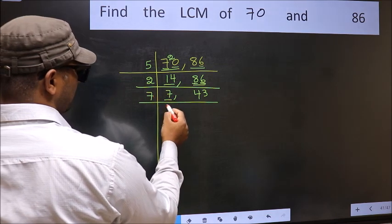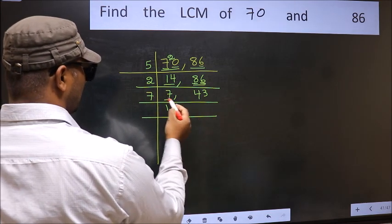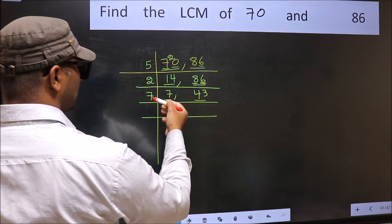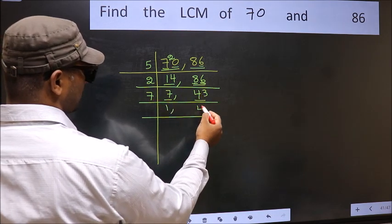7 is a prime number, so 7 once 7. The other number, 43, is not divisible by 7, so you write it down as it is.